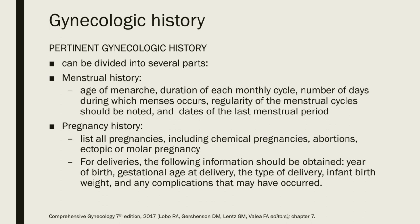A pertinent gynecologic history begins with the menstrual history, noting the age of menarche, duration of each monthly cycle, number of days during which menses occur, and regularity. The dates of the last menstrual period should also be obtained. The characteristics of menstrual flow — including color, amount, and accompanying symptoms such as cramping, nausea, headache, or diarrhea — should be noted. Any vaginal bleeding not related to menses and its relationship to events such as coitus or contraceptive device use should be noted. For postmenopausal women, the age of last menses, hormone replacement therapy history, and any postmenopausal bleeding should be recorded.